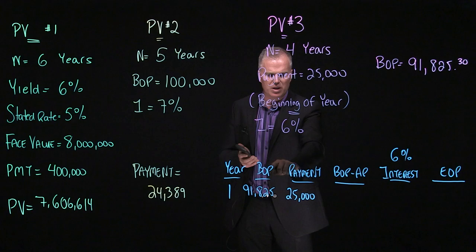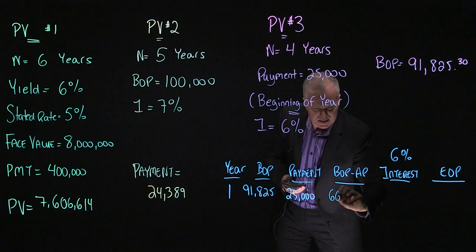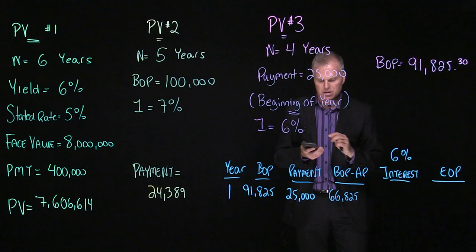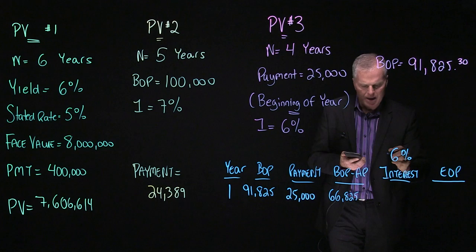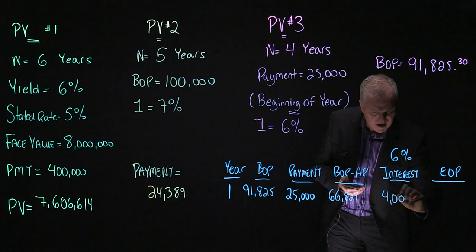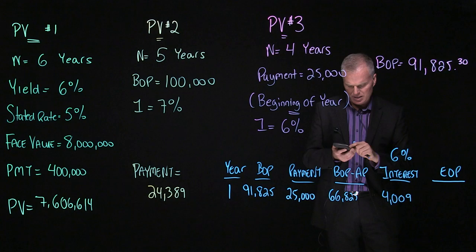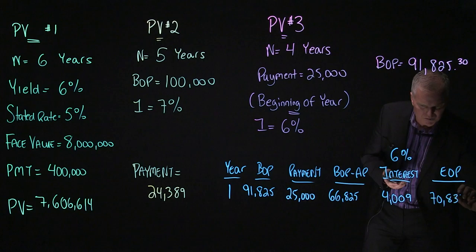And this is our first year. A payment occurs right at the beginning. So BOP stands for beginning of period. Payment then. And then what is the amount after the first payment? Well, that is 66,825. Now this is the amount we're going to charge interest on at 6%. So 66,825 times 6% gives us a value equal to $4,009. Add that together with the 66,825. And your end of period amount will be $70,834, I believe.